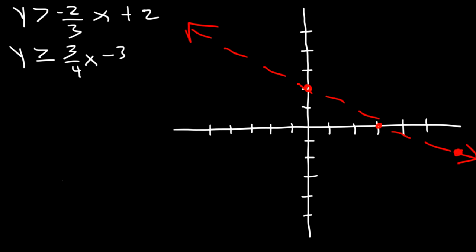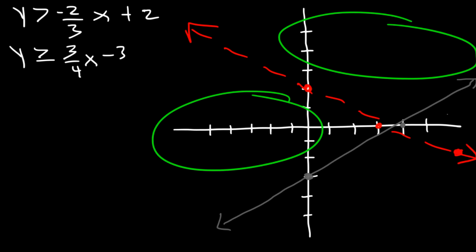Now let's graph the other equation. The y-intercept is negative 3 and the slope is 3 over 4 — so we go up 3 units and over 4. That gives us the x-intercept at (4, 0). Since it's greater than or equal to, we connect those two points with a solid straight line. The answer is in one of the four regions formed by these two lines.